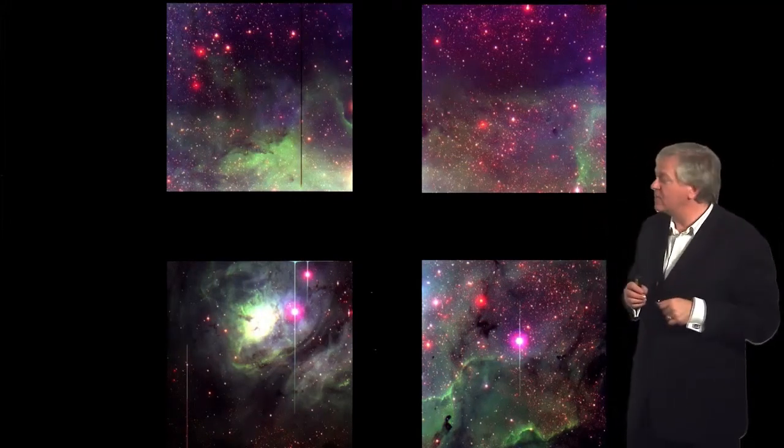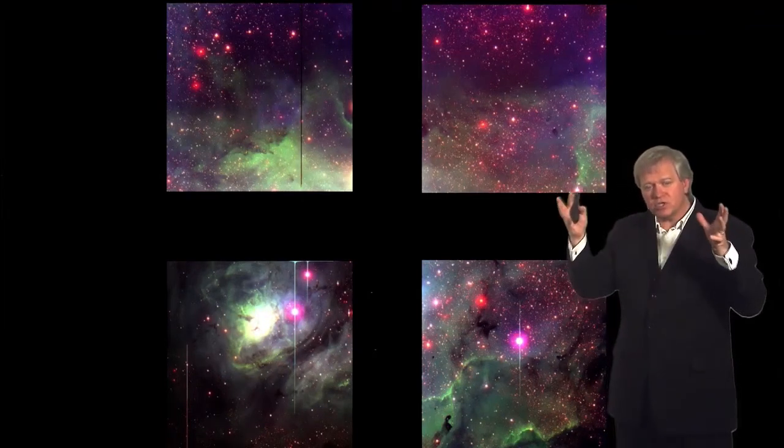Two megapixel detectors, so that doesn't sound that big now, but it was big back then, were coming online. And so we could take pictures with large telescopes to very, very faint levels of a big enough region of the sky to hopefully find one of these objects.